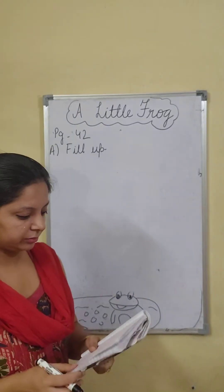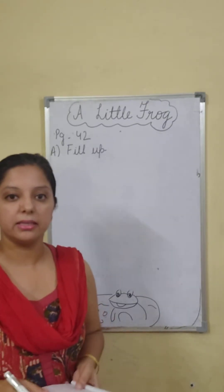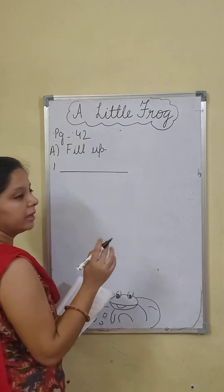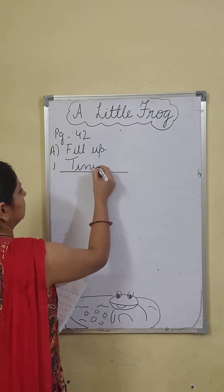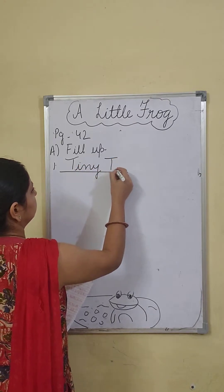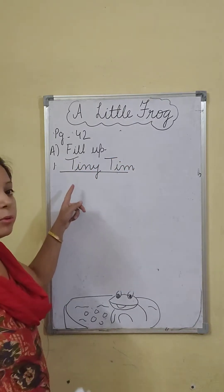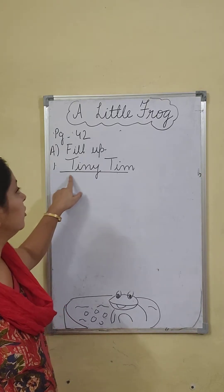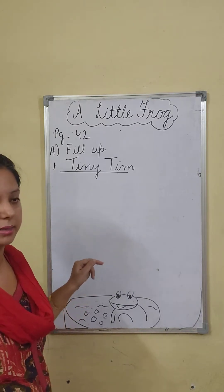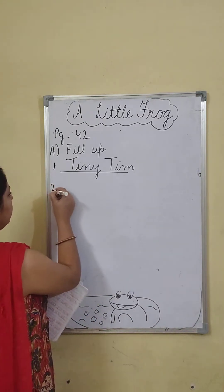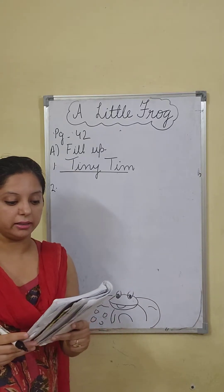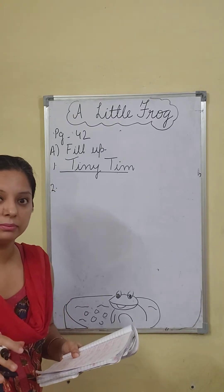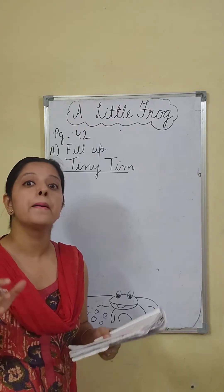Let's see what the fill-ups are about. The frog's name is — yes, frog ka naam kya tha? It was Tiny Tim. And children, whenever you are writing a name, it always begins with capital letters. The second fill-up is: The child put the frog in the — kahaan daala tha usne frog ko? He put it in the bathtub.